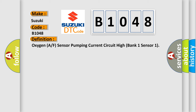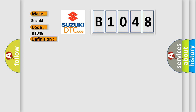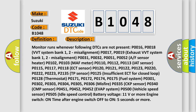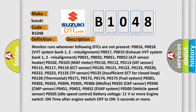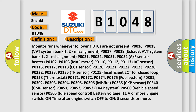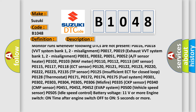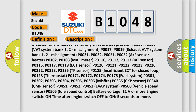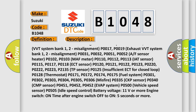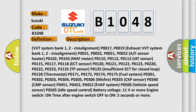The basic definition is: Oxygen A/F sensor pumping current circuit high, bank one sensor one. Monitor runs whenever the following DTCs are not present: P0016, P0018 — VVT system bank one/two misalignment; P0017, P0019 — exhaust VVT system bank one/two misalignment; P0031, P0032, P0051, P0052 — AF sensor heater; P00102, P00103 — mass air meter.